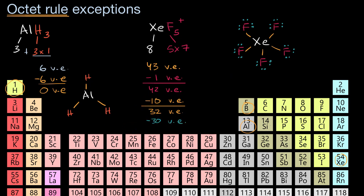And then what does that leave me with? That leaves me with two valence electrons that have gone unallocated. And the only place to now put them is on the xenon.